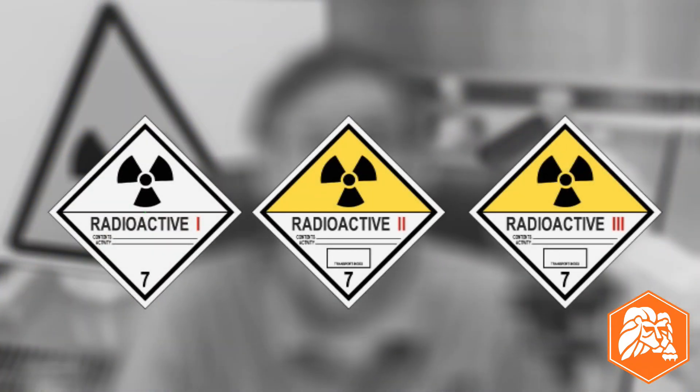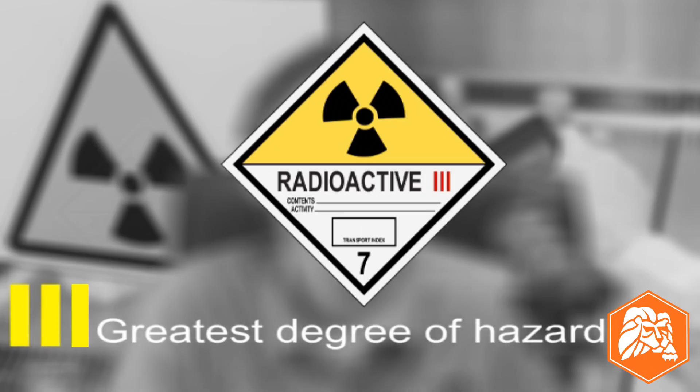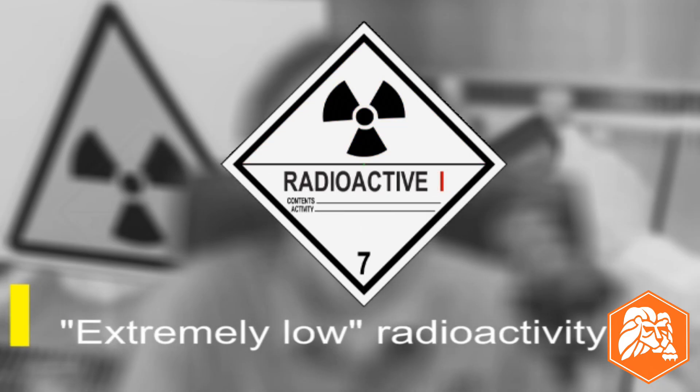Radioactive materials are not divided into packing groups, but there are labels for Class VII materials that feature a 1, a 2, and a 3. There's one very important difference with radioactives: the 3 designates the greatest degree of hazard, while the 1 label indicates extremely low radiation levels — the reverse of what we're used to with Packing Groups 1, 2, and 3. That covers our non-packing group classes and divisions. Now you've seen how each class and division is divided to indicate severity of hazard, and why getting this step right is so important to transportation safety and compliance.